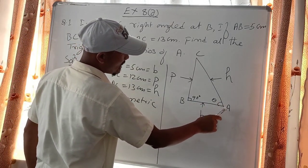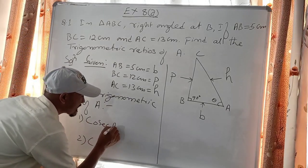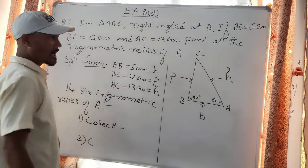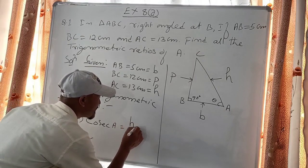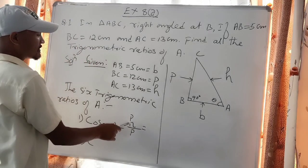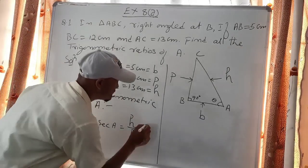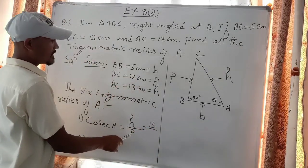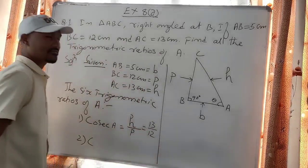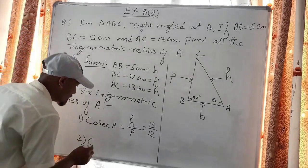The formula for cosec of A: the ratio of cosec A is hypotenuse over perpendicular. The hypotenuse is 13 and the perpendicular is 12, so cosec A equals 13 by 12.